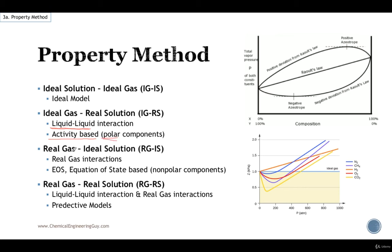And real gas, ideal solution, something happens when we use high pressure systems. But the solutions are ideal. That is, they are non-polar. So this is mostly based on non-polar interaction which uses high pressure. So we can use an equation of state. Now worst case scenario, as stated before, is the real gas real solution in which we have liquid-liquid interactions and real gas interactions. So we need predictive models.